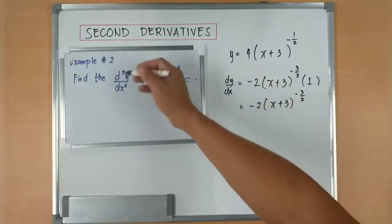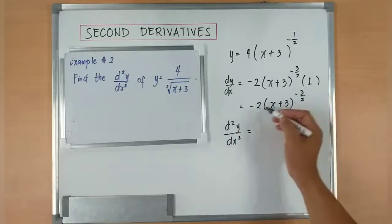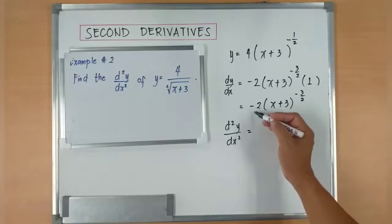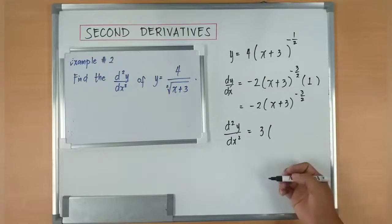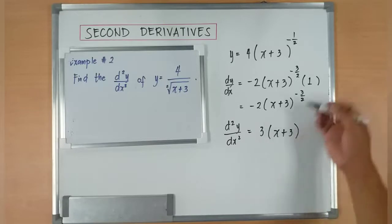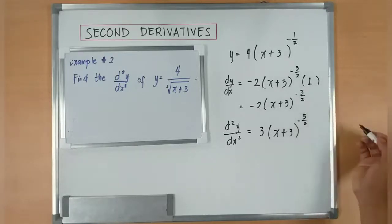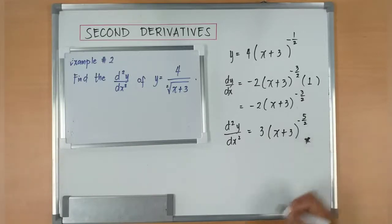To find out that second derivative, we'll have d squared y over dx squared. You'll get now negative 3 over 2 times negative 2 is positive 3. Then bring back x plus 3. Then you subtract this by 1. Negative 3 over 2 minus 1 is negative 5 over 2 times 1. So you'll get the second derivative.